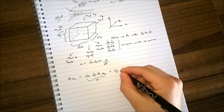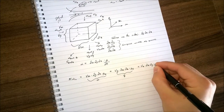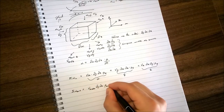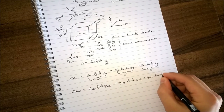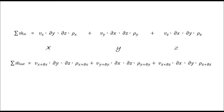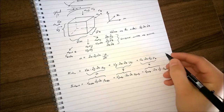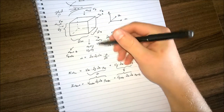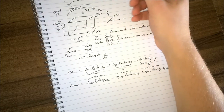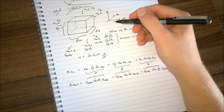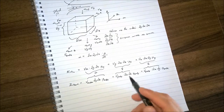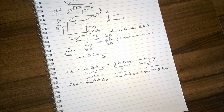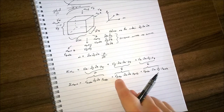Similarly, for the flow rate out: the outflow faces are at different positions, so the velocity and density are evaluated at x+DX, y+DY, and z+DZ respectively. The areas are the same because it's still a cube, but the density could differ — for example, rho at x+DX. The same applies for y and z outflows.